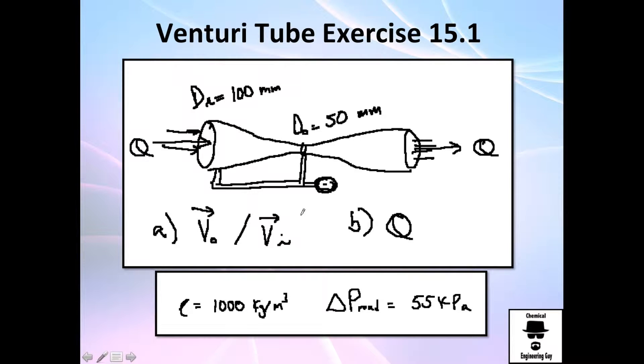Let's do the Venturi tube exercise. We got this Venturi tube, diameter here is 100 millimeters, the diameter of the throat is 50 millimeters. We have the gauge pressure measurement and we know there's a volumetric flow rate, but we don't know it. They give you the reading of change in pressure, and you know that you are operating with water so you have the density.